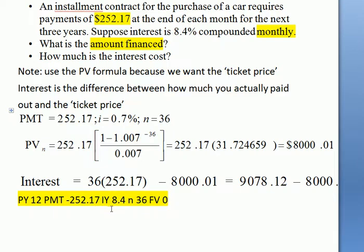IY, 8.4 and then N is 36. Don't forget to set FV at 0 because we're looking for a present value. Once you'd entered those in, go Compute PV and you will get $8,000 come up.